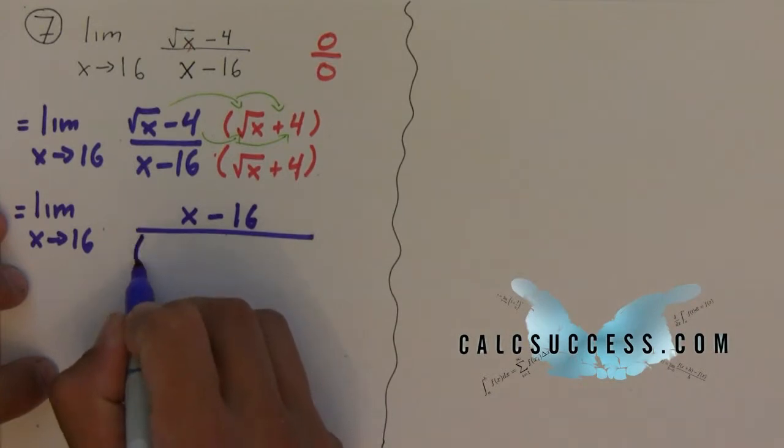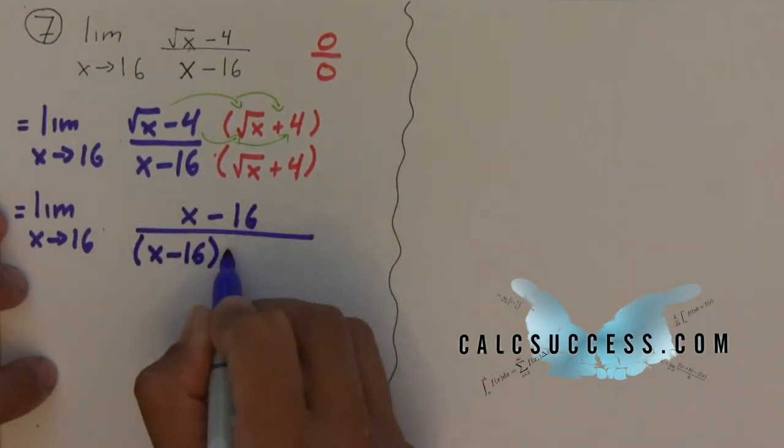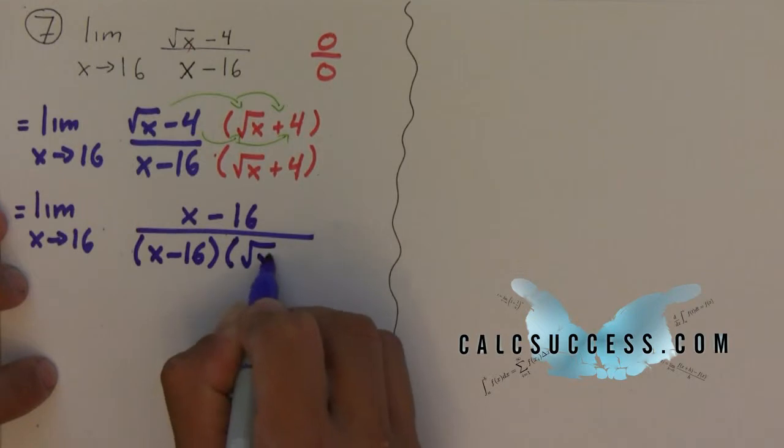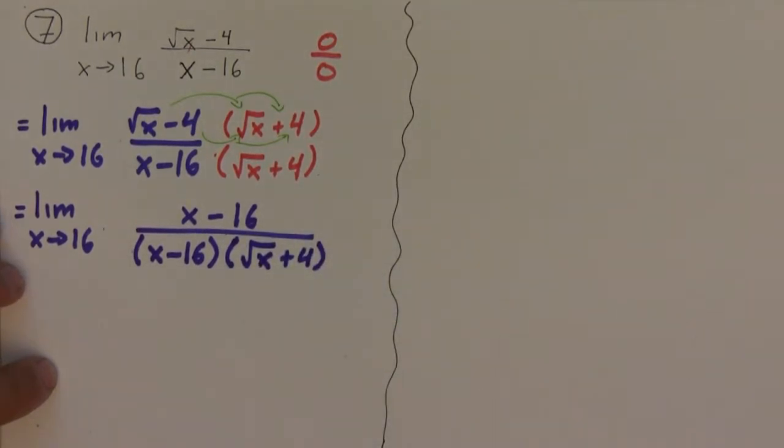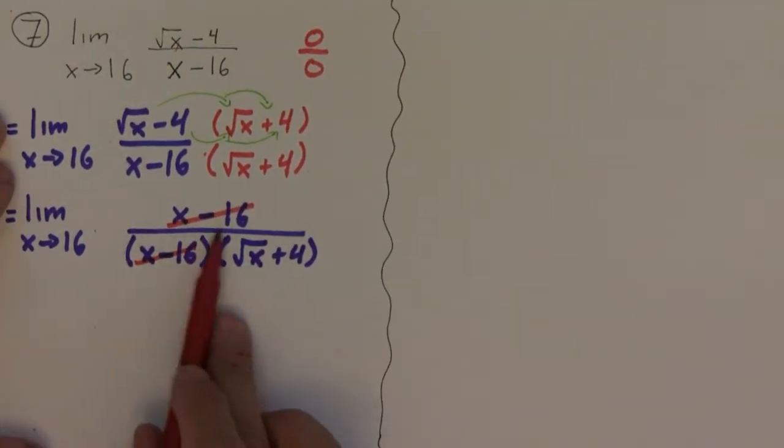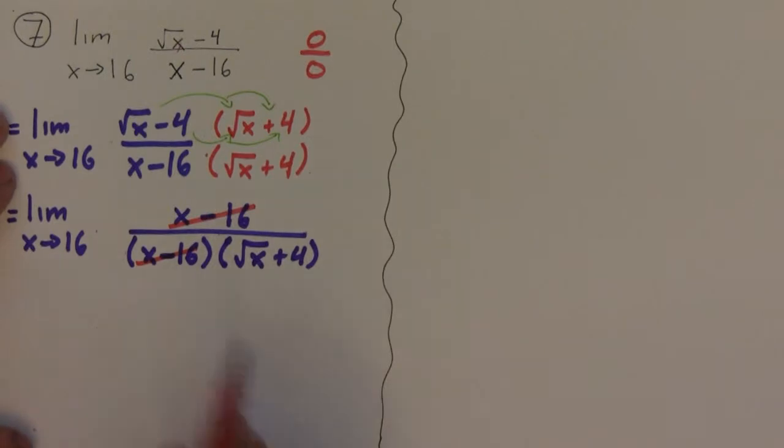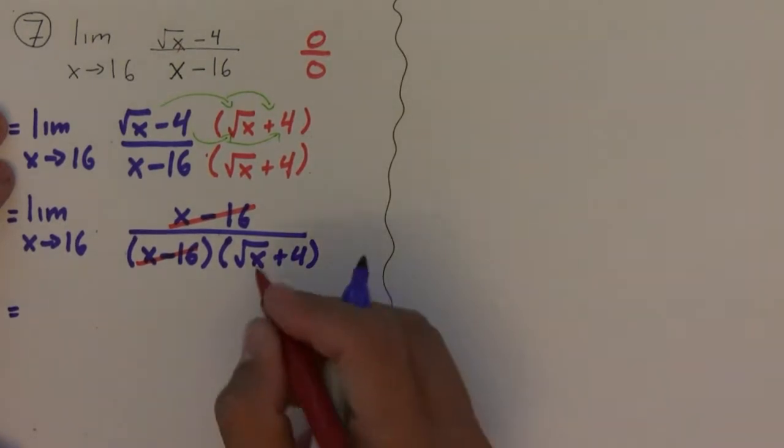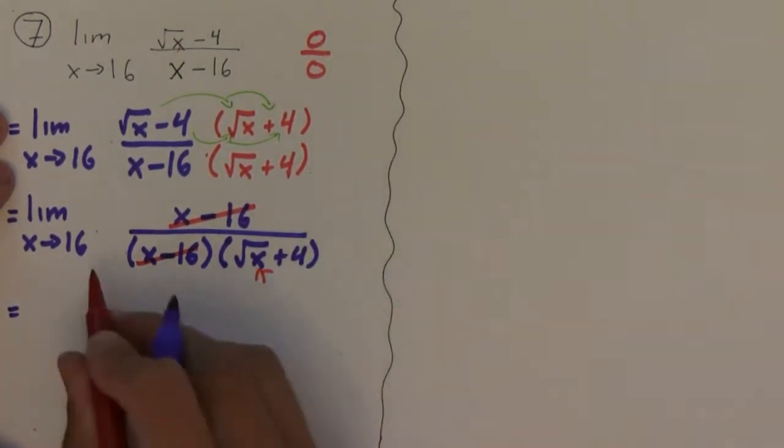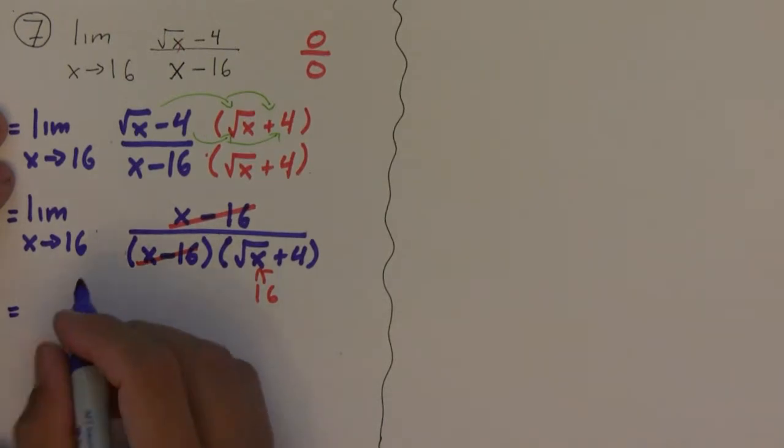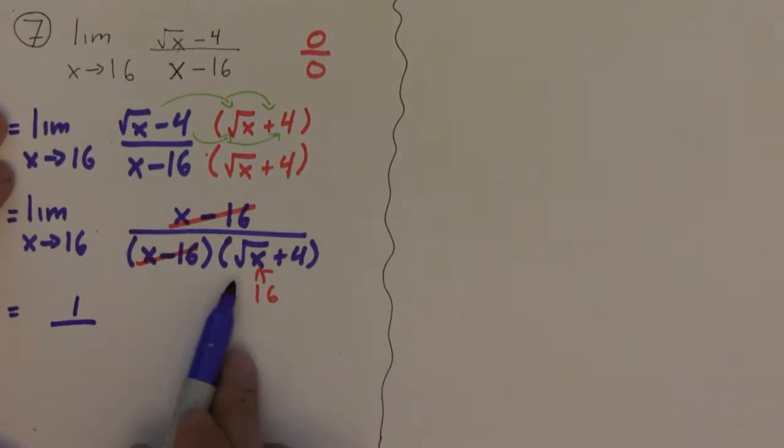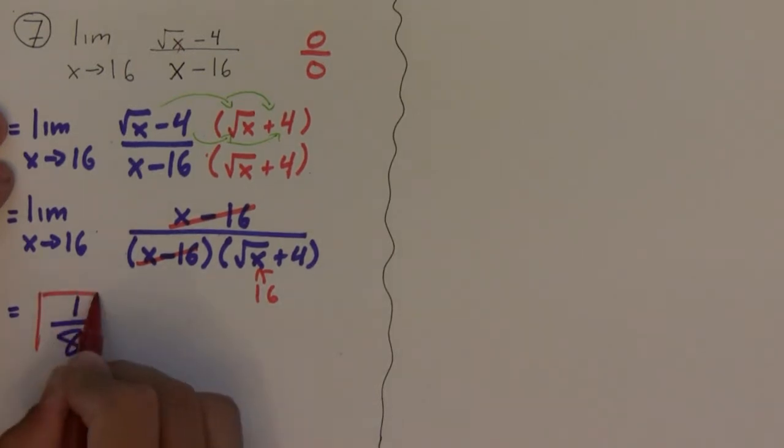Now again, you don't want to distribute and you'll probably see by now why we didn't want to distribute on the denominator. It's because I can now divide the x minus 16 on top with the x minus 16 that was on the bottom. And if I do that, I can now plug in the 16, and so what I would get is on top, remember you're left with a 1 on top, and on bottom, square root of 16 is 4 plus 4 is 8. And so that's the limit.